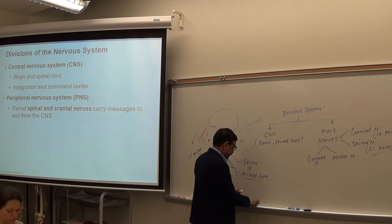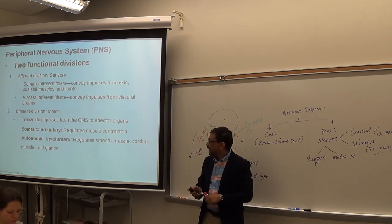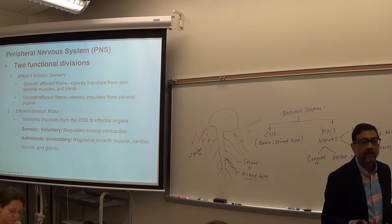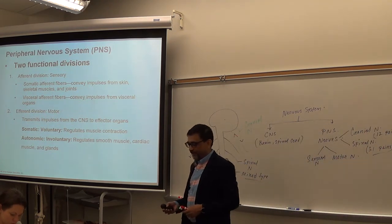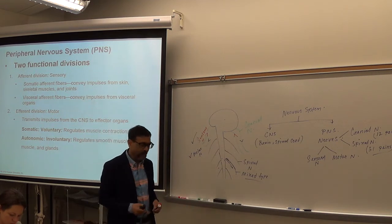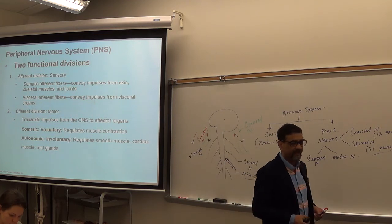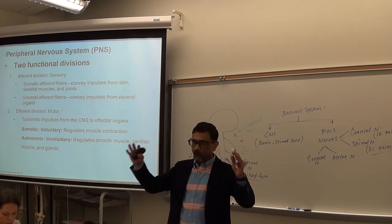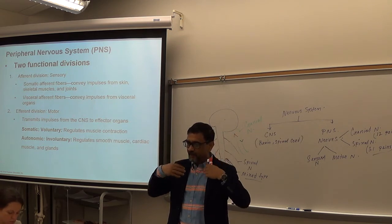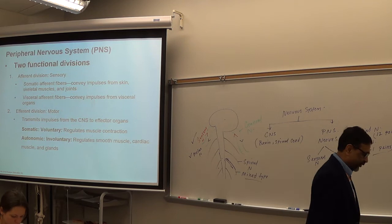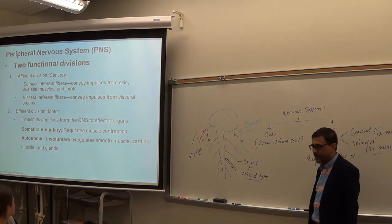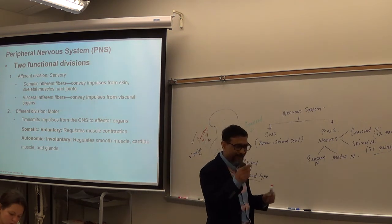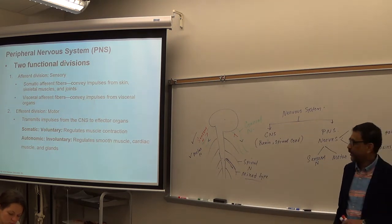Sensory nerves are also called afferent — arriving, starting with A, going towards the brain. Motor nerves are called efferent — exiting, starting with E, getting out. So afferent means going towards the brain, and efferent means going away from the brain. You can remember: A for arriving, E for exiting.